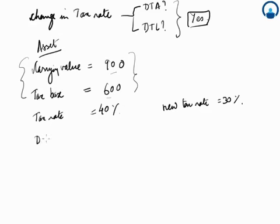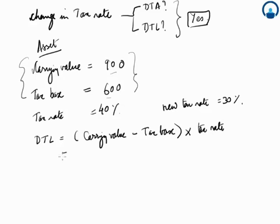Multiplied by the tax rate, so this will come out to be 900 minus 600 multiplied by 40%. This is 300 into 40 percent. We have seen that earlier, this comes equal to 120 as the deferred tax liability.